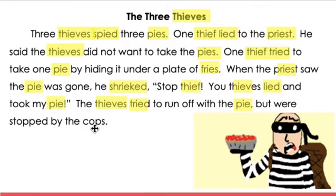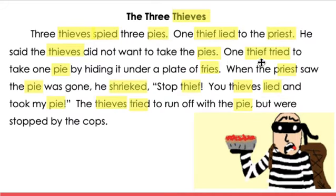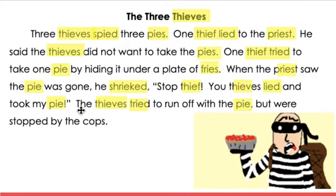Ready? Read along with me this time. Let's begin. The Three Thieves. Three thieves spied three pies. One thief lied to the priest. He said the thieves did not want to take the pies. One thief tried to take one pie by hiding it under a plate of fries. When the priest saw the pie was gone, he shrieked, Stop, thief! You thieves lied and took my pie. The thieves tried to run off with the pie, but were stopped by the cops.